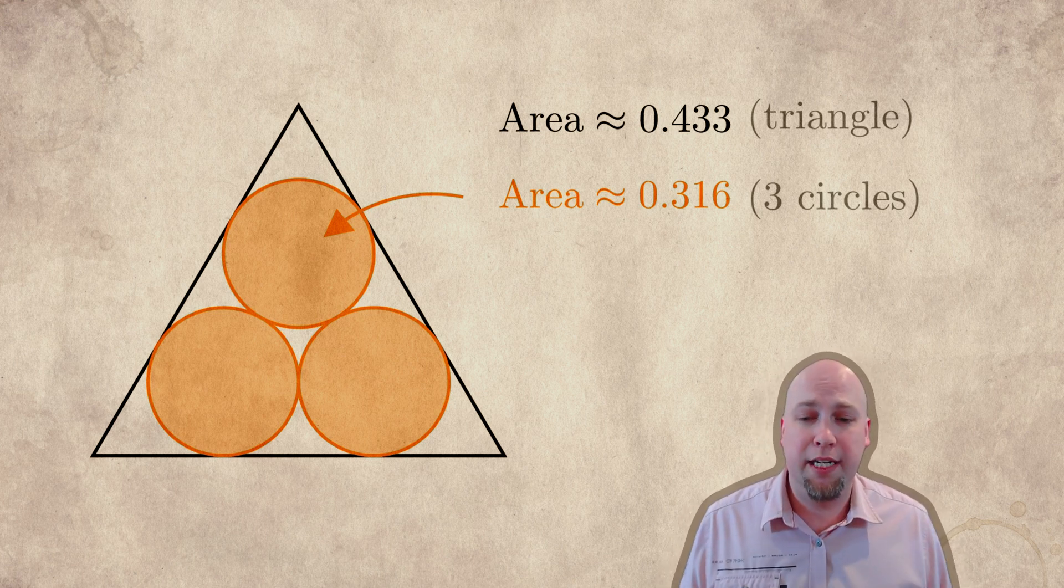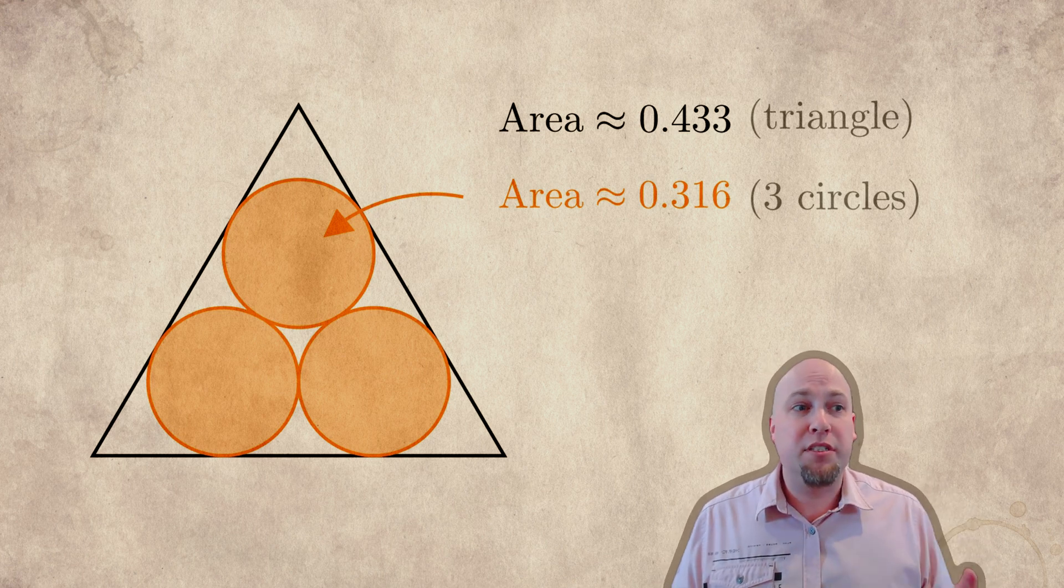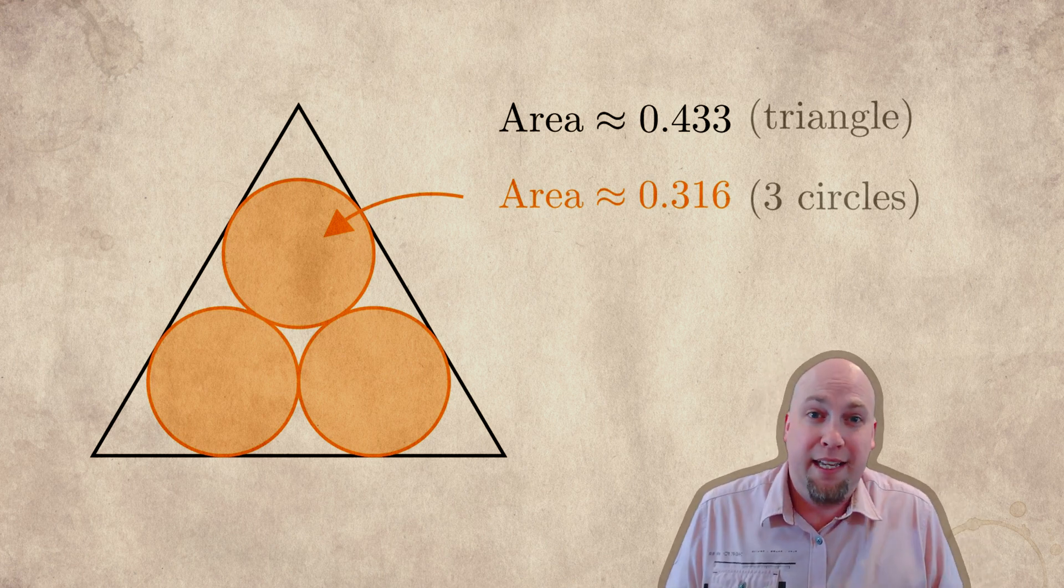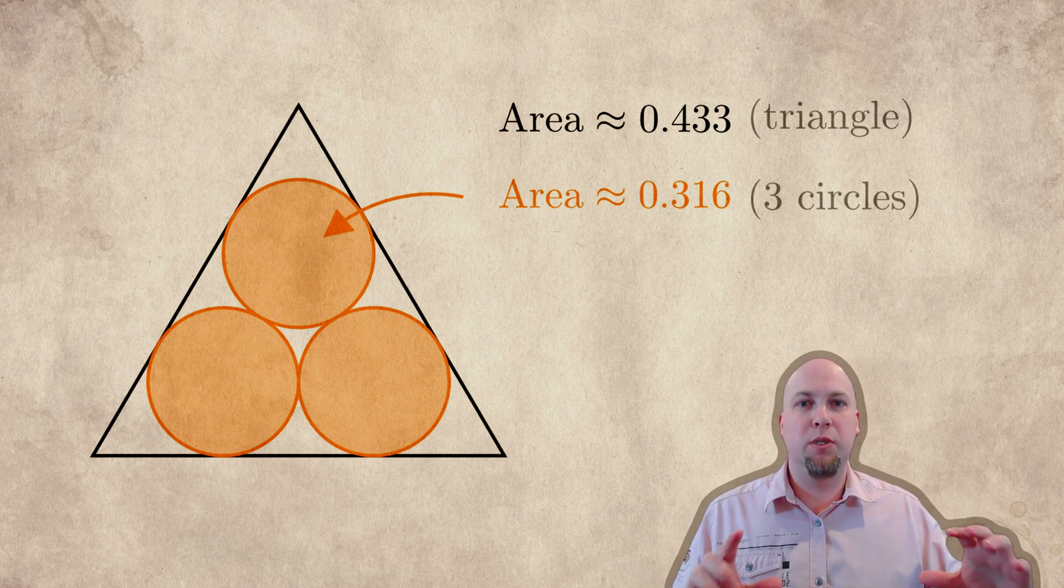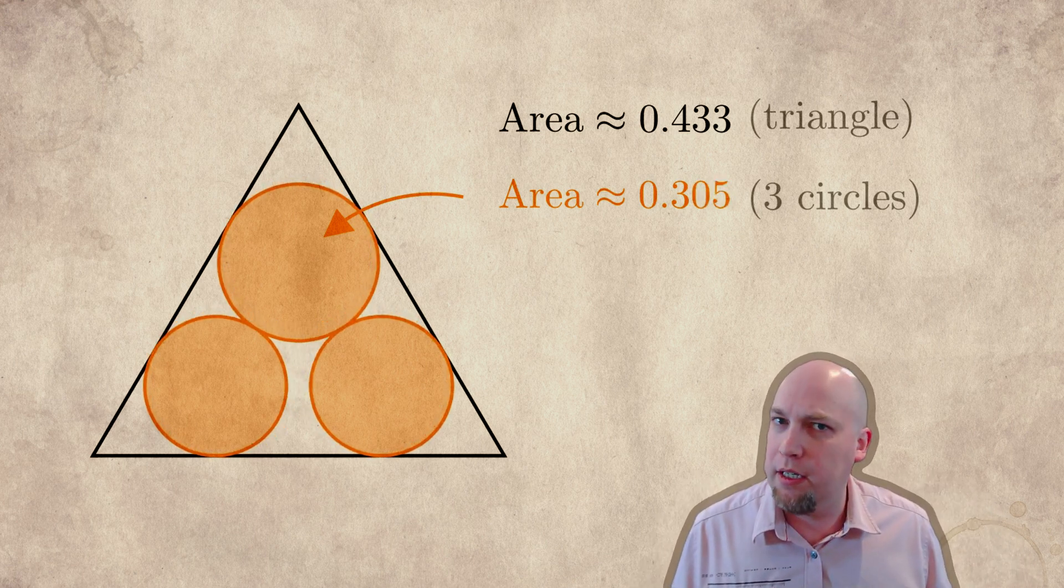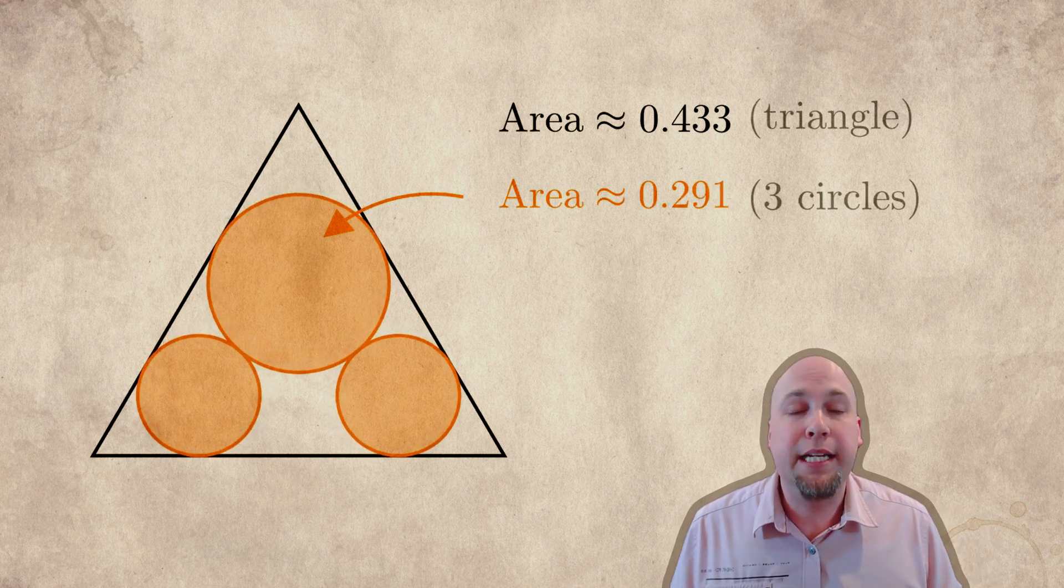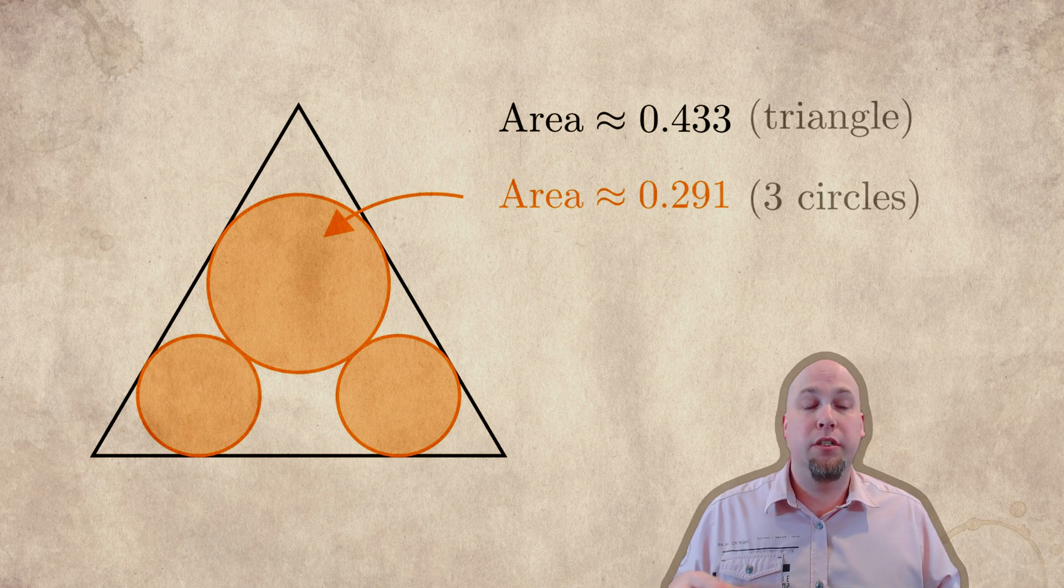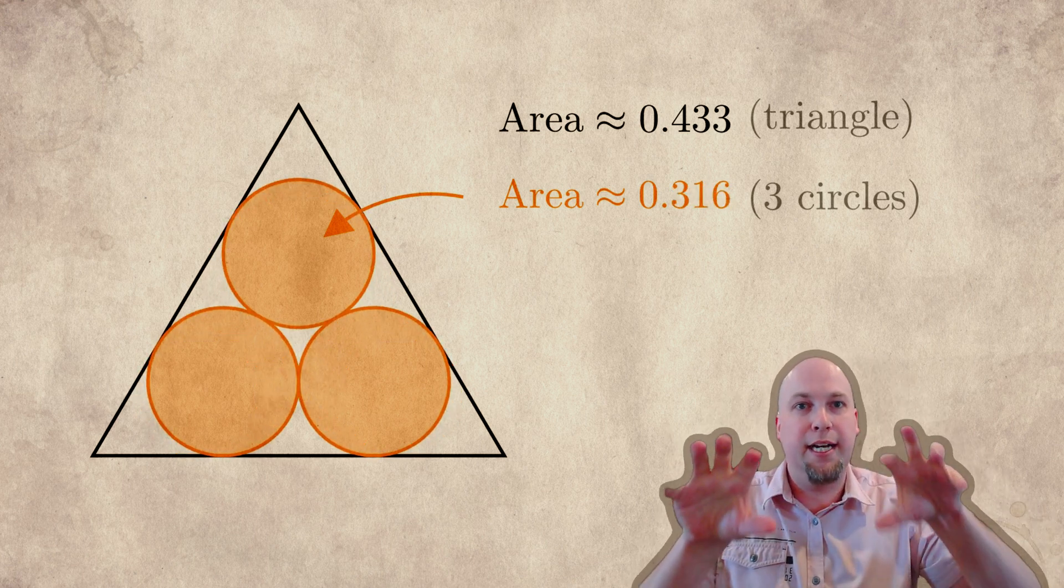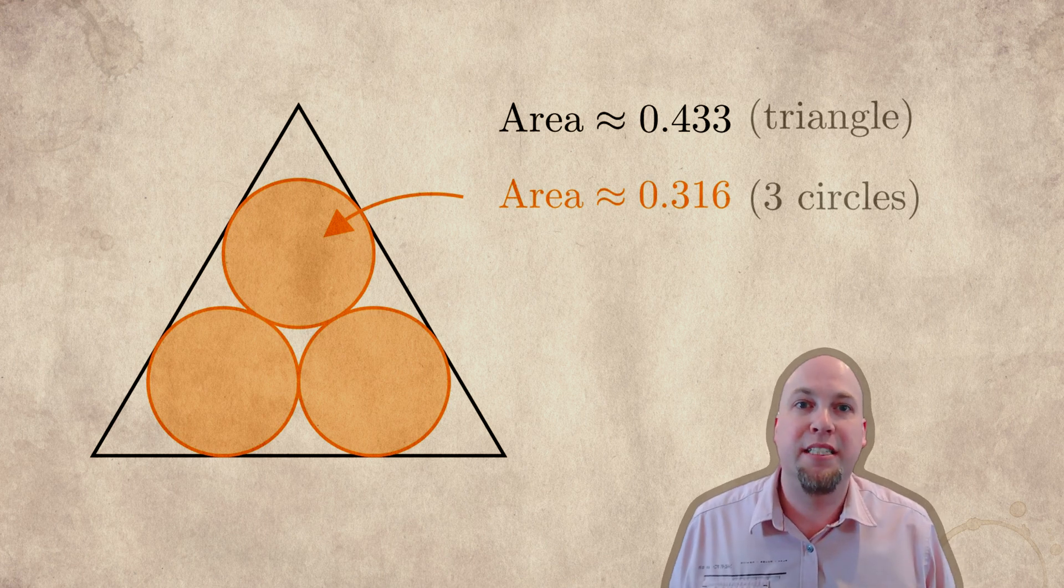So that's how much of the triangle is covered, about 72.9%. And at first, this seems really good. This seems like maybe it's optimal, because if you wiggle things around a little bit, in other words, if you make one of the circles a little bit larger at the expense of making the other circles a little bit smaller, you'll notice that the area covered goes down. So it really does seem like this equally sized circle configuration is the best that we can do.